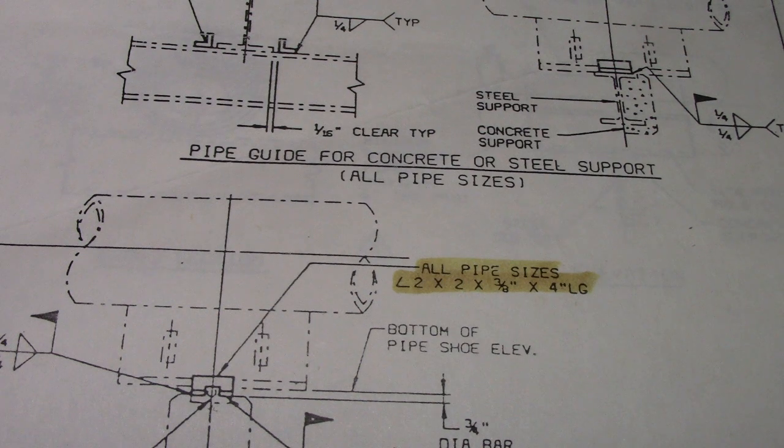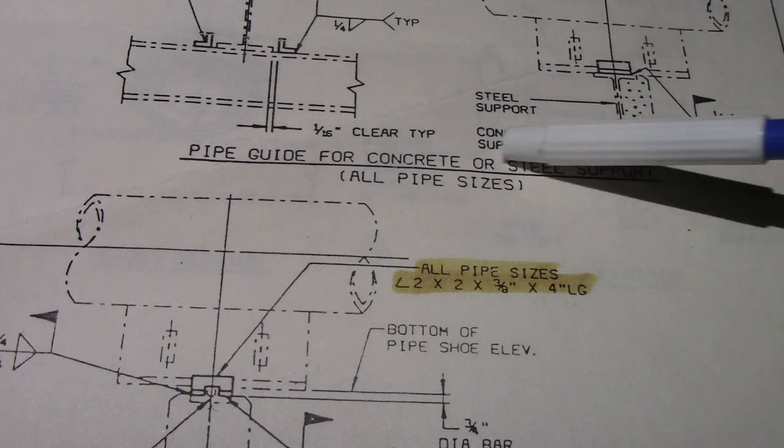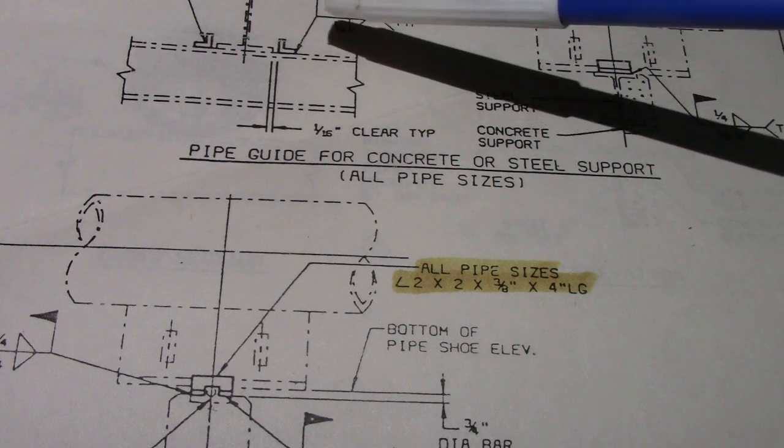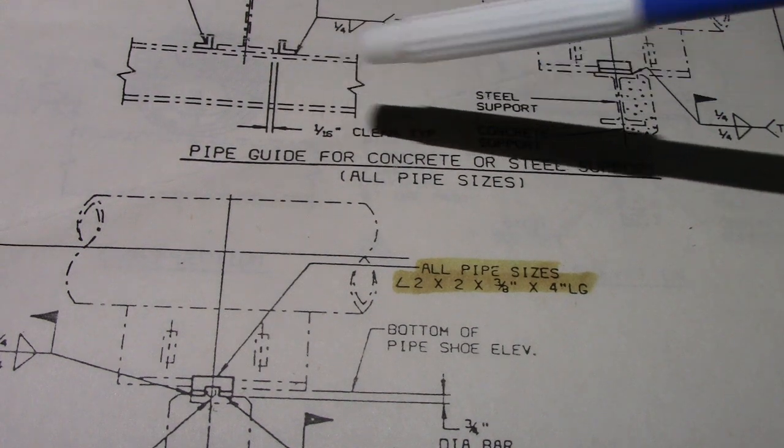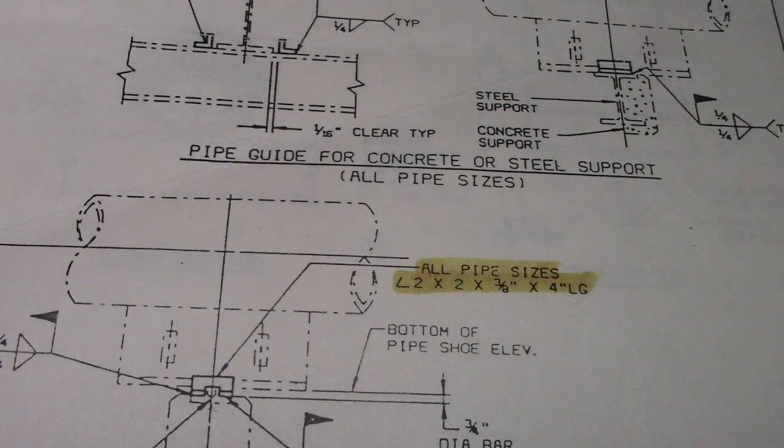They can also put it in the punch list if this is line checked. During QC line checking, if they see there's no gap, they can comment it: modify and put a gap based on the specification.